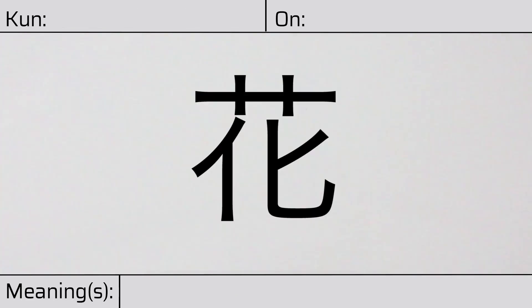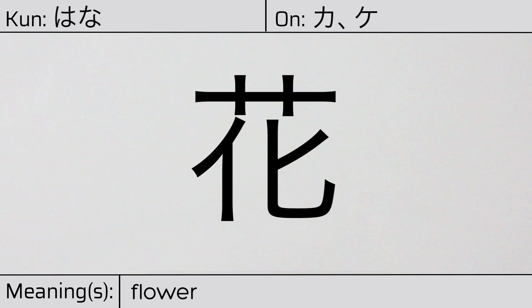Welcome to this lesson on Japanese kanji. Today, we'll be discussing this character. This kanji has kunyomi or Japanese reading of hana, and it has onyomi or Chinese readings of ka or ke. This character has the meaning flower.